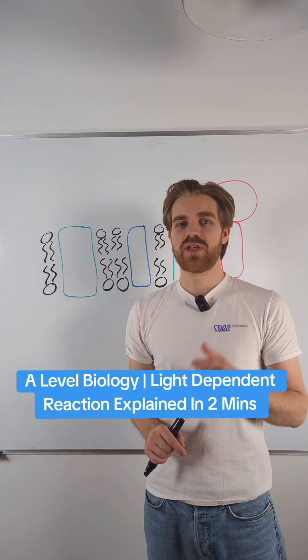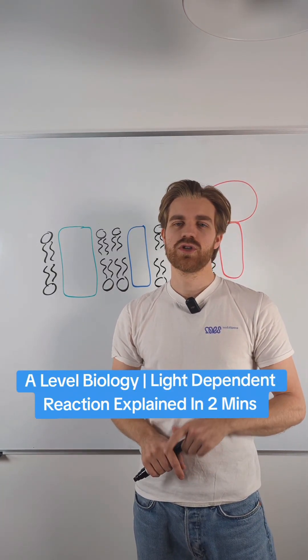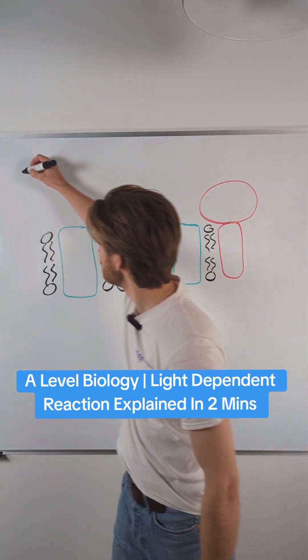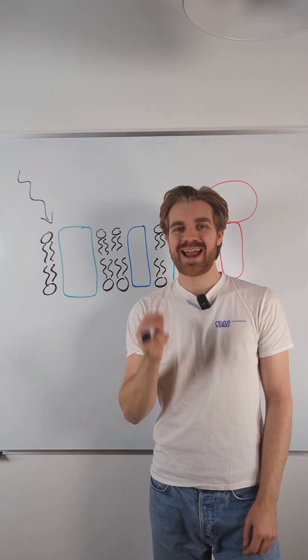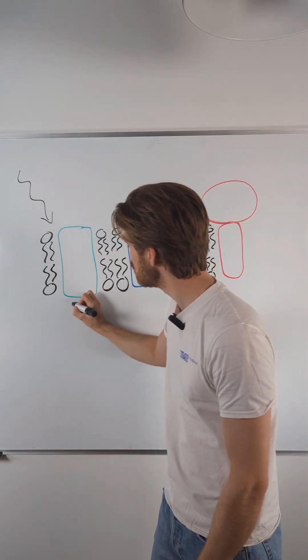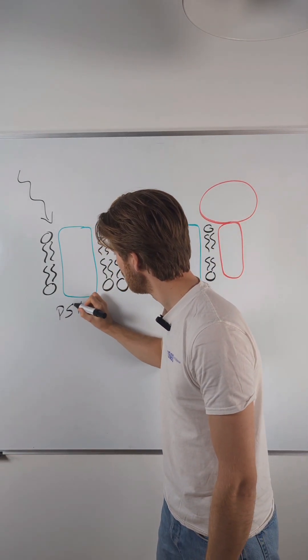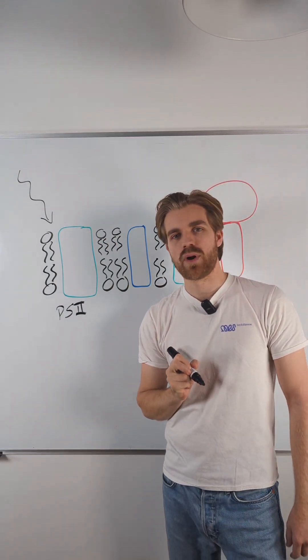Hi, I'm Joe and I'm going to explain the light-dependent reaction for you. So we start with light coming in to the chloroplast and hitting photosystem II on the thylakoid membrane.